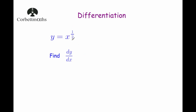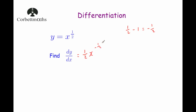Our next question is a little bit different because we've got a power which is a fraction, but it's still the same technique — bring the power down and reduce the power by 1. So y equals x to the power of a half. dy by dx: bring the power down, so it's going to be a half times x, and then take 1 away from the power. A half take away 1 equals minus a half. So dy by dx equals a half x to the power of minus a half.